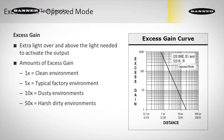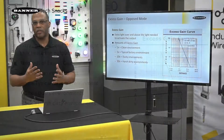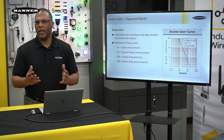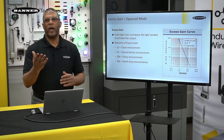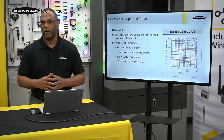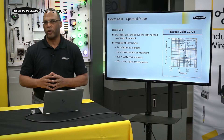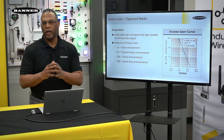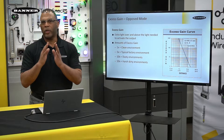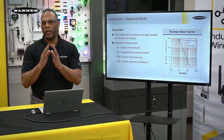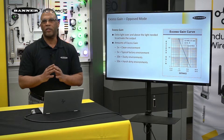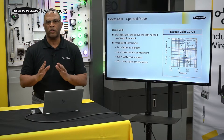So in this chart that we're looking at, out at 20 meters we have an excess gain of one. Now that means the sensor can see a target, but barely. That's equivalent to you and I going to the eye doctor and they say, 'What's the smallest chart you can read?' You may be able to read that chart, but just barely.